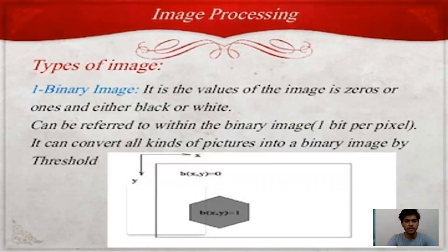Types of image. The first one is binary image. The values of the image are 0s or 1s — either black or white. It is referred to as 1 bit per pixel. It can convert all kinds of pictures into a binary image by threshold. We can see the example of binary image.